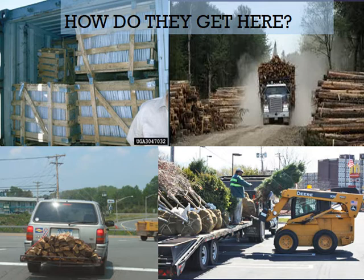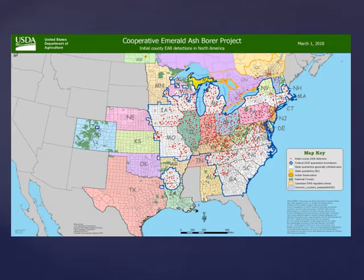Once in the country, it has been rapidly moved around by transporting wood material, especially firewood. One of the main things that people can do to address the issue of invasive species is to stop moving wood material such as firewood. We suggest buying firewood where you will burn it, rather than taking it with you on your camping trip. The EAB was first discovered in Detroit, Michigan in 2002, and since then it has spread to over 30 states and three Canadian provinces.